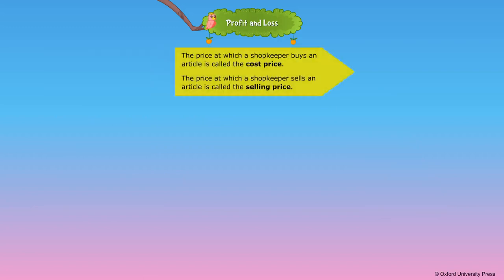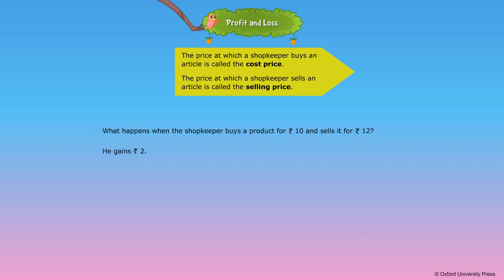When you do shopping, you will notice that every article has a price tag. This is the price at which the shopkeeper sells the article — it is called the selling price (SP). The shopkeeper buys the product from a wholesale market and then sells it in his shop. When the selling price is more than the cost price, the difference is called the profit. Profit = SP − CP.